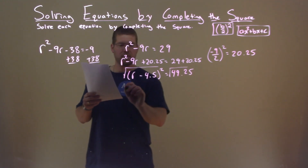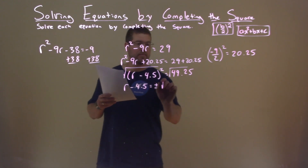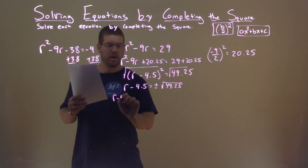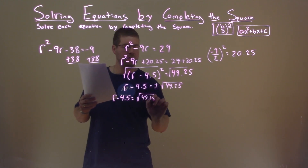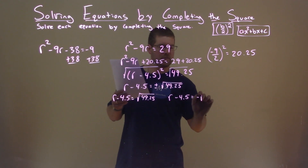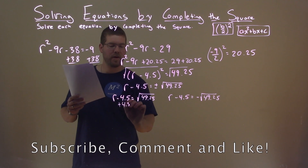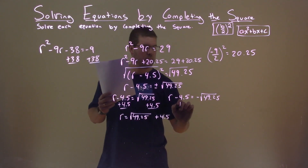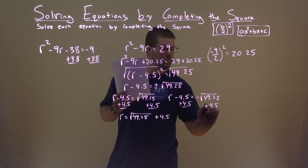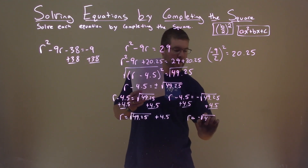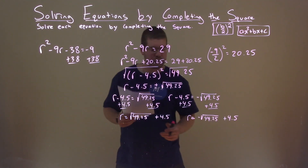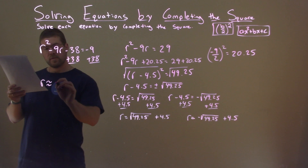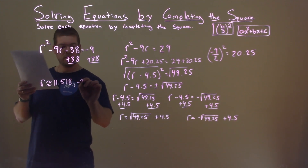Taking the square root of both sides: r minus 4.5 equals plus or minus the square root of 49.25. We can write two equations: r minus 4.5 equals positive square root of 49.25, and r minus 4.5 equals negative square root of 49.25. Adding 4.5 to both sides: r equals positive square root of 49.25 plus 4.5, and r equals negative square root of 49.25 plus 4.5. Those two numbers as decimals are approximately 11.518 and negative 2.518.